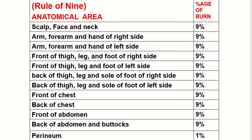The arm, forearm, and hand of the right side are 9%. The arm, forearm, and hand of the left side are also 9%. The front of the thigh, leg, and foot of the right side are 9%, and the front of the thigh, leg, and foot of the left side are also 9%.